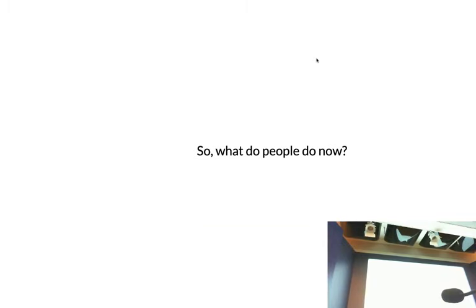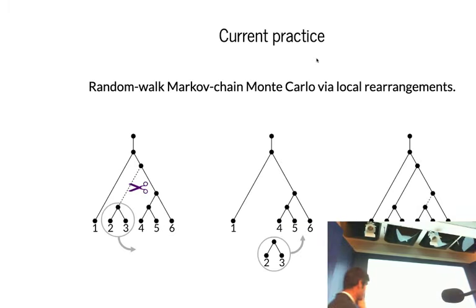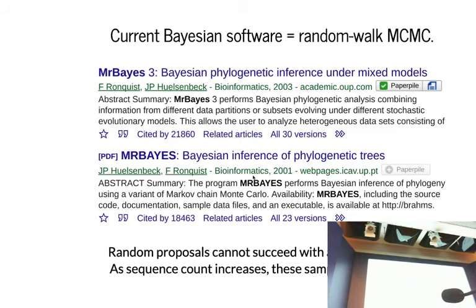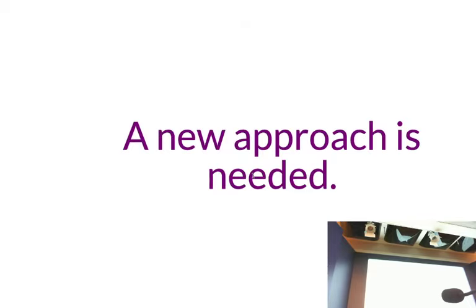But first, let's say what do people do now? The current process is random walk Markov chain Monte Carlo with these local rearrangements. These local rearrangements cut off a section of the tree, move it somewhere else, and then re-glue it. That's one move, one proposal for your phylogenetic MCMC. Literally, current Bayesian software is random walk Markov chain Monte Carlo. There's hundreds of thousands of citations for these software packages, and they're really grinding to a halt as we get more and more data.